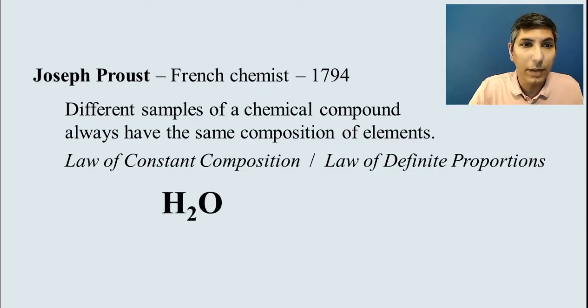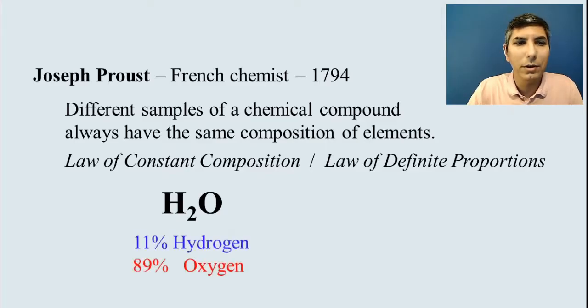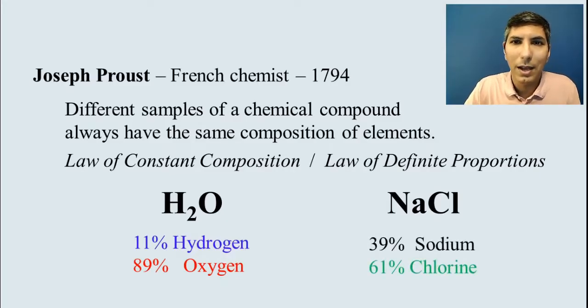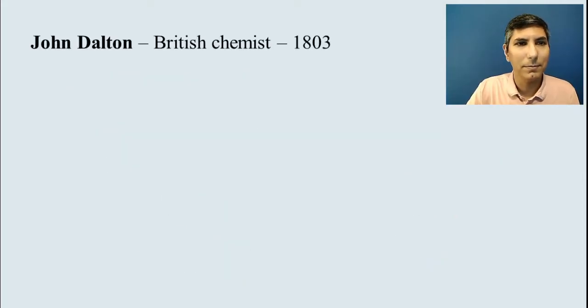We find that, for example, if you have a sample of water, it doesn't matter where that water comes from, it's always going to be about 11% hydrogen and about 89% oxygen. It doesn't matter where that water comes from. At the same time, if we take other compounds like sodium chloride, it doesn't matter where the sodium chloride comes from. As long as it's a pure sample, it's going to be about 39% sodium and about 61% chlorine. So this is the constant composition that we see for these chemical compounds.